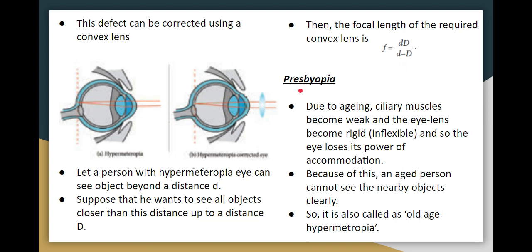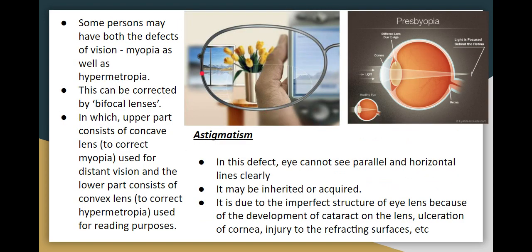Next is presbyopia. With aging, the ciliary muscles become weak and the eye lens becomes rigid, losing flexibility. The power of accommodation is lost. This is called old age hypermetropia. Persons develop both myopia and hypermetropia — short-sightedness and long-sightedness together. To correct this, bifocal lenses are used — the upper portion for long distance and the lower portion for near distance.